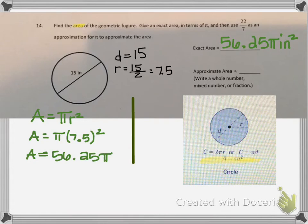Now, for the approximate area, we will replace pi with 22 sevenths, as we were told in the directions. Area equals 56.25 times 22 sevenths.